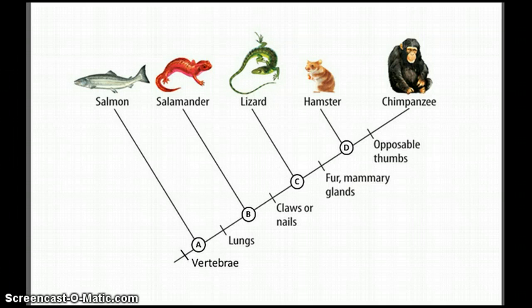Cladograms tell us which organisms evolved from common ancestors. Another thing that cladograms can tell us is how closely related organisms are.